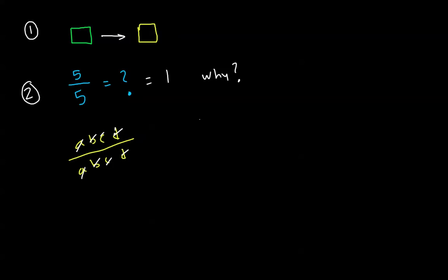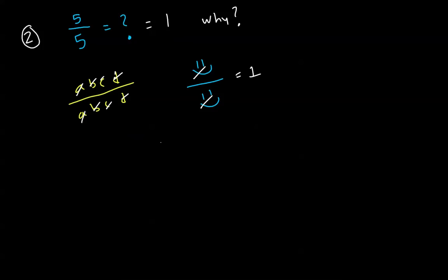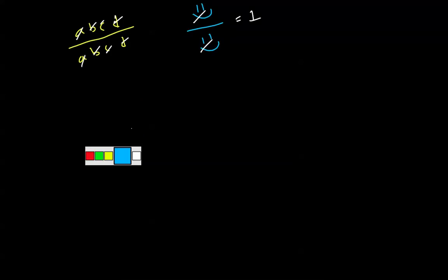Another example: if you have a smiley face up here and a smiley face down there, they cancel out — they're equal to 1. You get the idea. Now let's go on to an example of dimensional analysis.